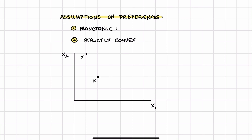Monotonic, first, just means that more is better. That is, if I'm here at bundle X, if I have the same amount of X2 but I get a little more X1, I would strictly prefer that to having less X1. Or if I'm at the same level of X1 and I get a little more X2, I would strictly prefer that to having less.